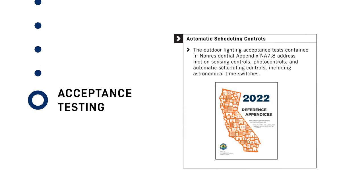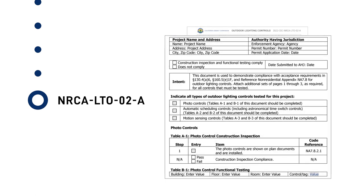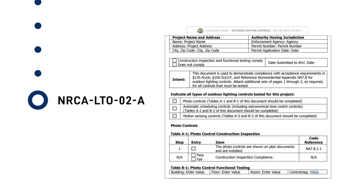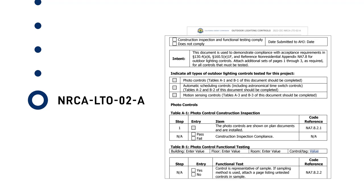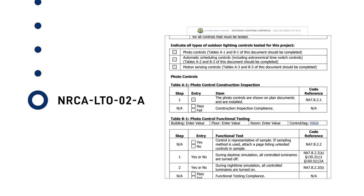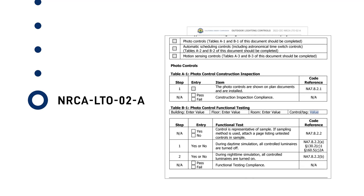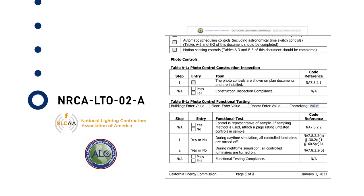The Outdoor Lighting Acceptance Test, contained in non-residential appendix NA 7.8, addresses motion sensing controls, photo controls, and automatic scheduling controls, including astronomical time switches. Acceptance test results for outdoor lighting controls are documented by the Certified Lighting Controls Acceptance Test Technician on the Certificate of Acceptance NRCA-LTO-02-A. The official Lighting Controls Certificates of Acceptance may only be accessed and submitted by a Certified Lighting Controls ATT through their Approved Acceptance Test Technician Certification Provider, or ATTCP, portal. It is important to remember that an official Lighting Controls Certificate of Acceptance will contain the ATTCP's logo to differentiate it from the information-only version of the form.